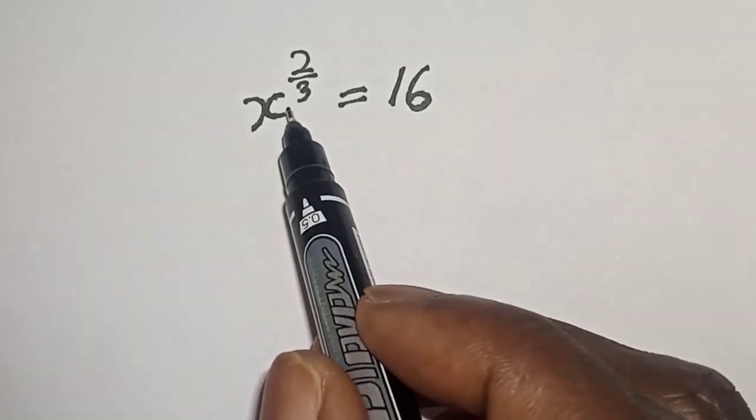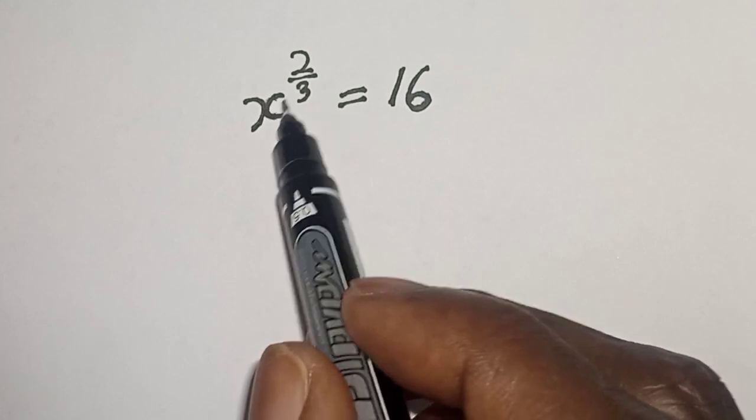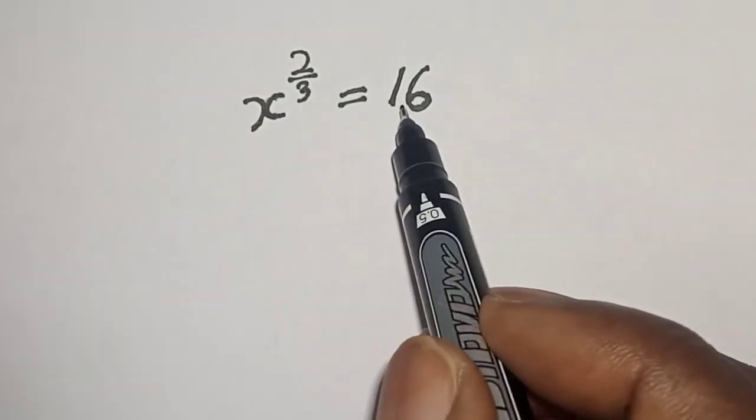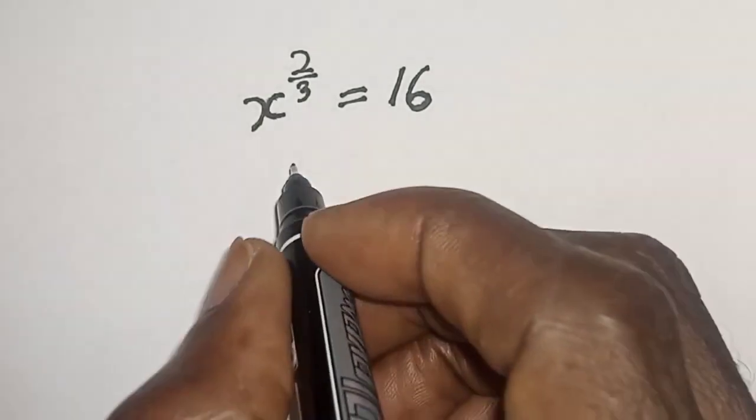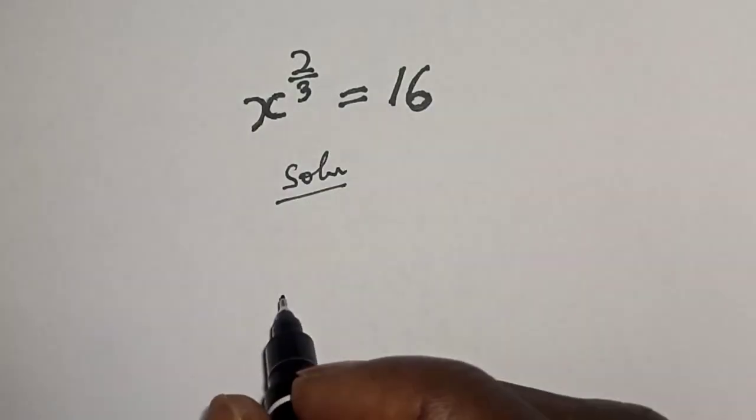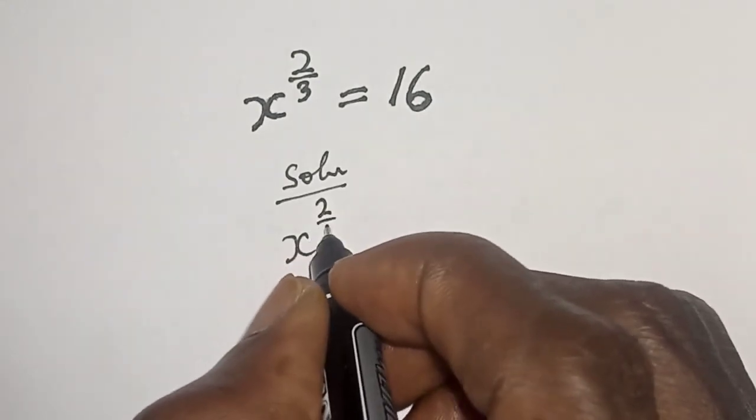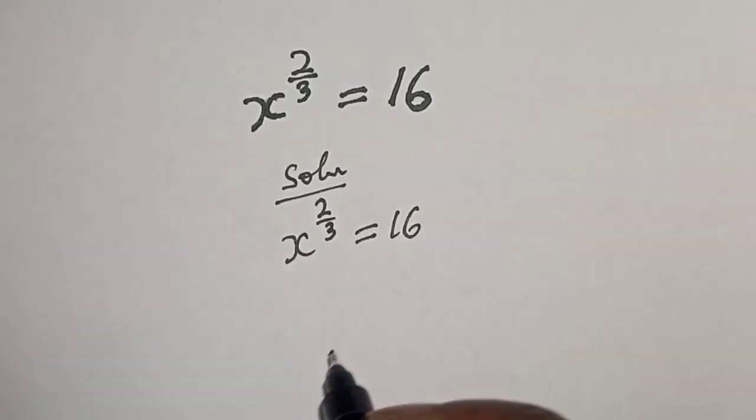Hello everyone, welcome to my focus. We want to find the value of x from this equation: x raised to power 2/3 is equal to 16. Solution: x raised to power 2/3 is equal to 16.